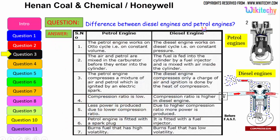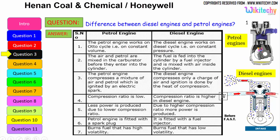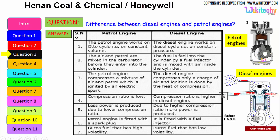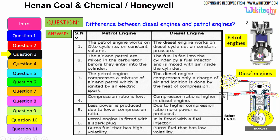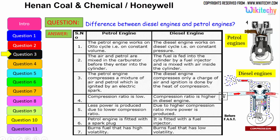Let's see the difference between the diesel engine and the petrol engine. The petrol engine works on the Otto cycle, therefore on constant volume, whereas the diesel engine works on the diesel cycle at constant pressure. The air and petrol are mixed in the carburetor before entering the cylinder, whereas in diesel the fuel is fed into the cylinder by a fuel injector and mixed with air inside the cylinder. The petrol engine compresses a mixture of air and petrol which is ignited by an electrical spark, while the diesel engine compresses only air and ignition is done by the heat of compression.